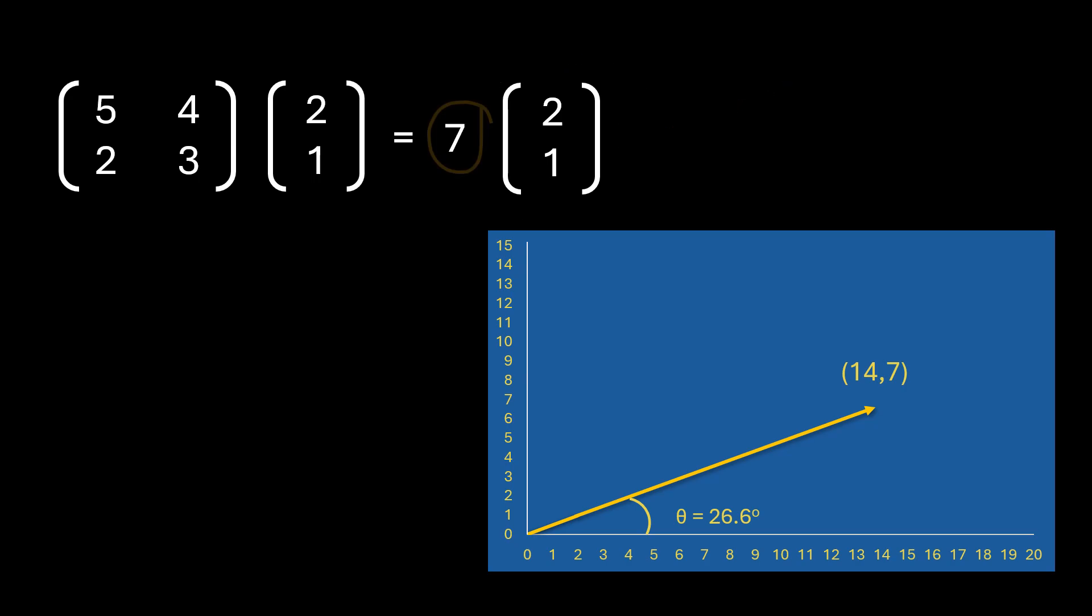And this value 7 is called eigenvalue. This eigenvalue only changes the magnitude of the vector. It either increases or decreases it. It does not change its line of action or its direction. So we can say that this only scales the original eigenvector. So it is in fact a scaling factor.